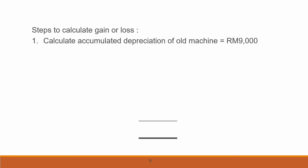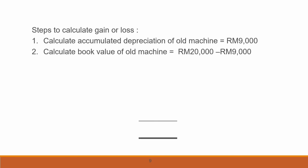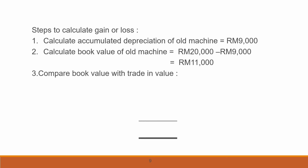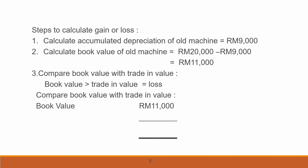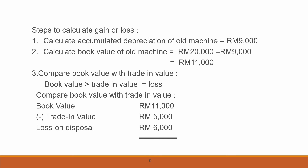Now we use the formula to calculate gain or loss. Accumulated depreciation of the old machine from the schedule is RM9,000, and the book value is RM11,000. Comparing the book value of RM11,000 with the trade-in value of RM5,000, we get a loss on disposal of RM6,000.